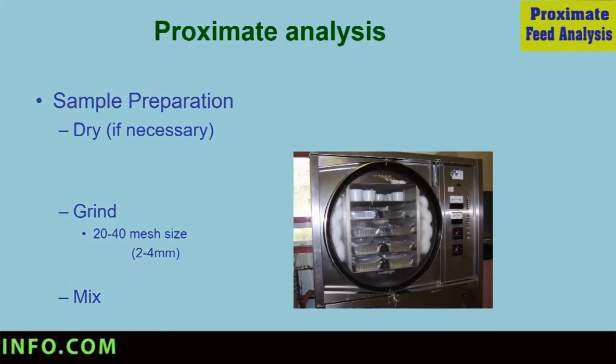After drying the sample, we should go for grinding the sample. By using a feed mill or grinder, we need a sample that should have a particle size of 20 to 40 mesh size. That's a sieve size or technically it is 2 to 4 millimeter. So 20 to 40 mesh means 2 to 4 mm is the sample particle size. And then after grinding, it should be thoroughly mixed and we should take a very representative sample.